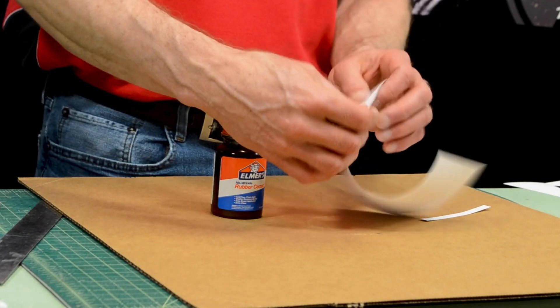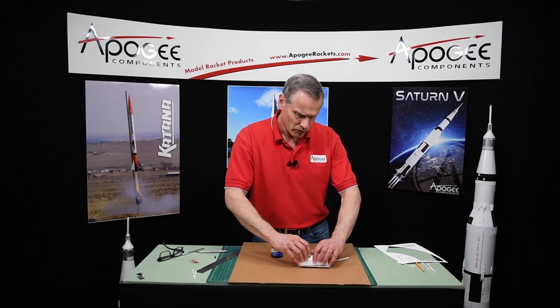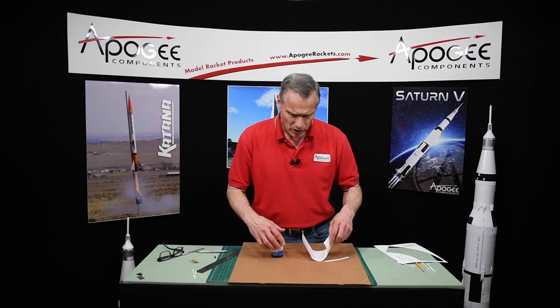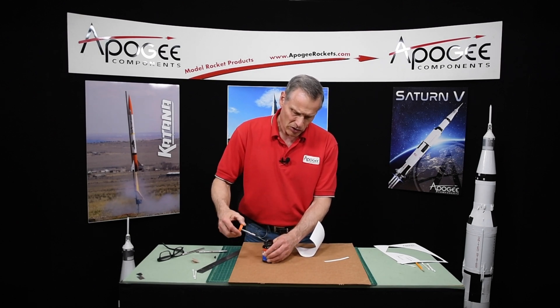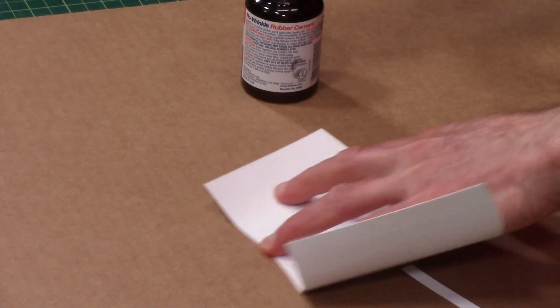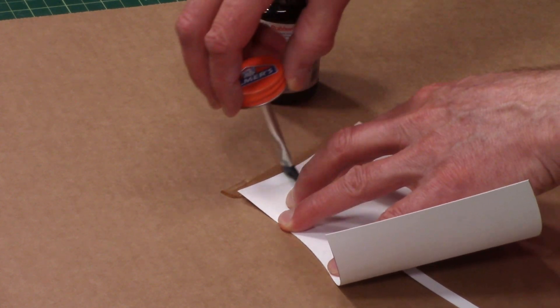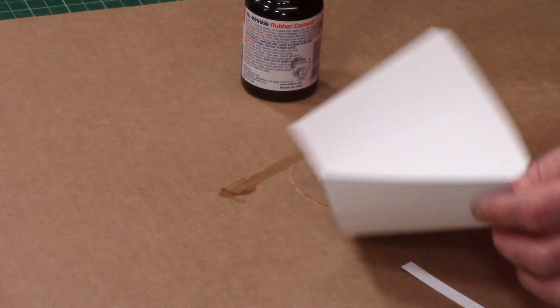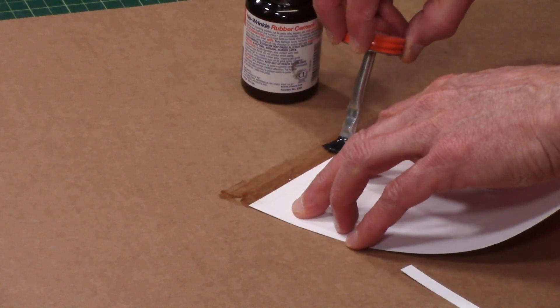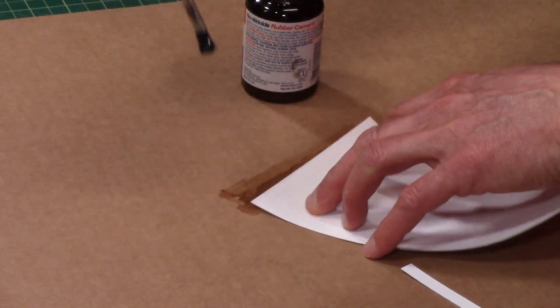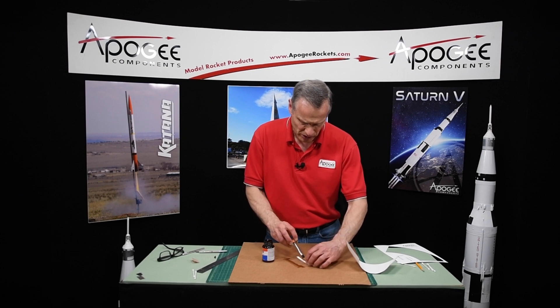The way you use this is you paint it on both parts before you bring it together. So I'm going to paint it on this edge, and this is why I'm protecting my table here. And then we're going to paint this as well, we'll paint the whole thing.